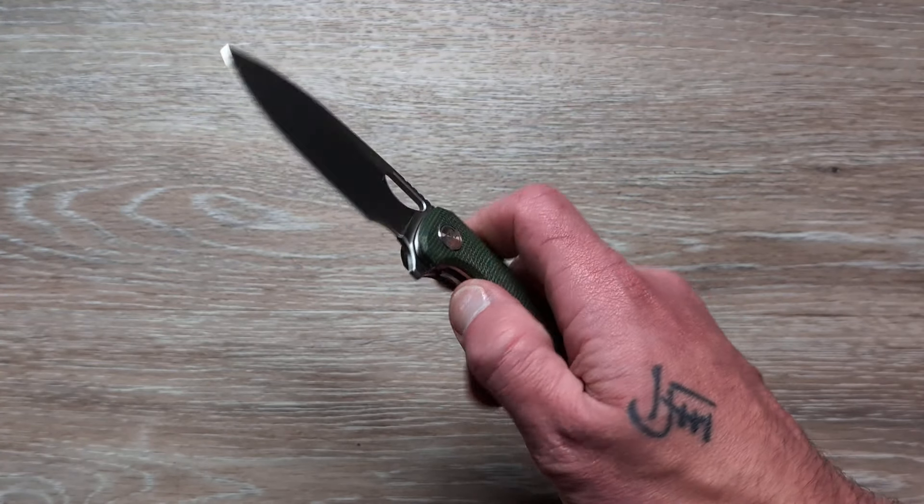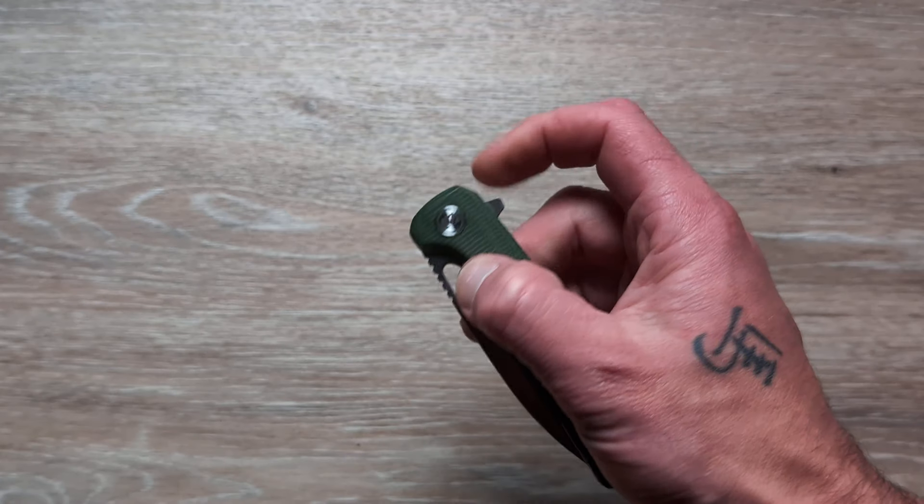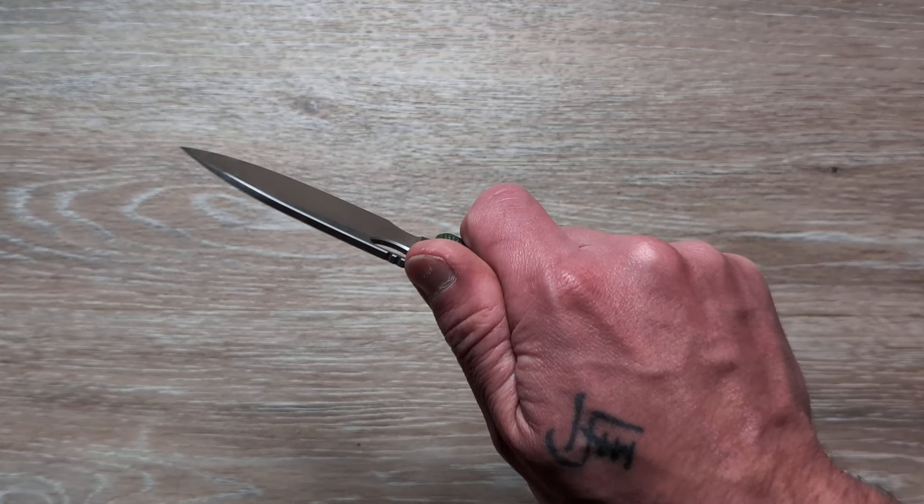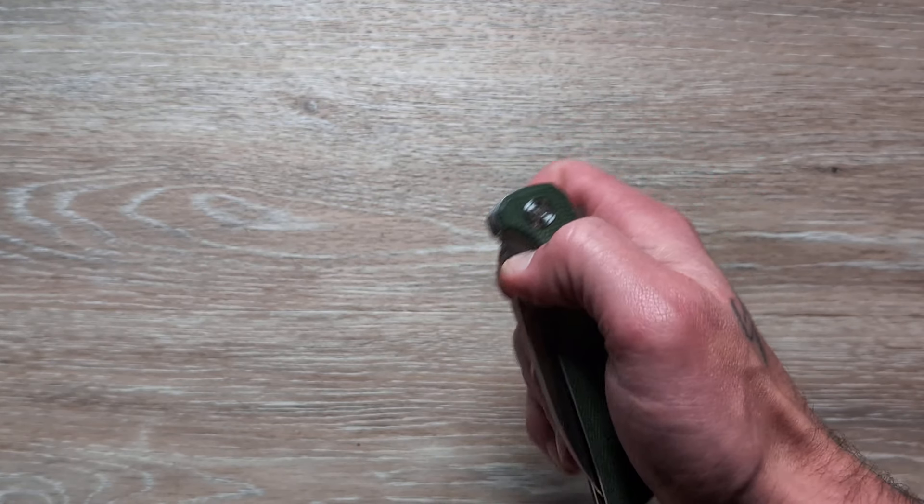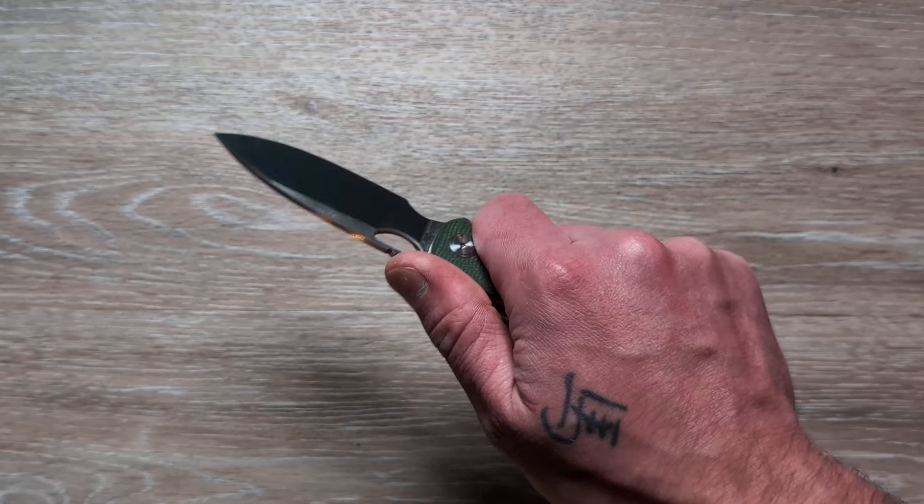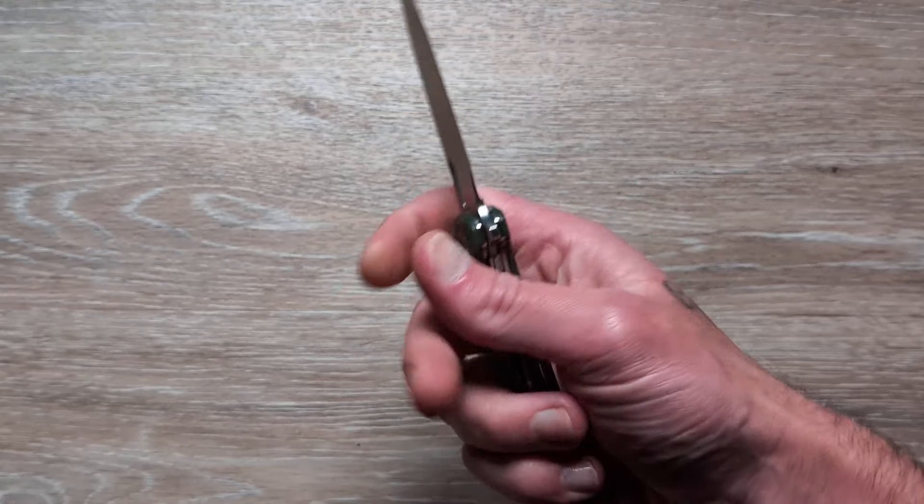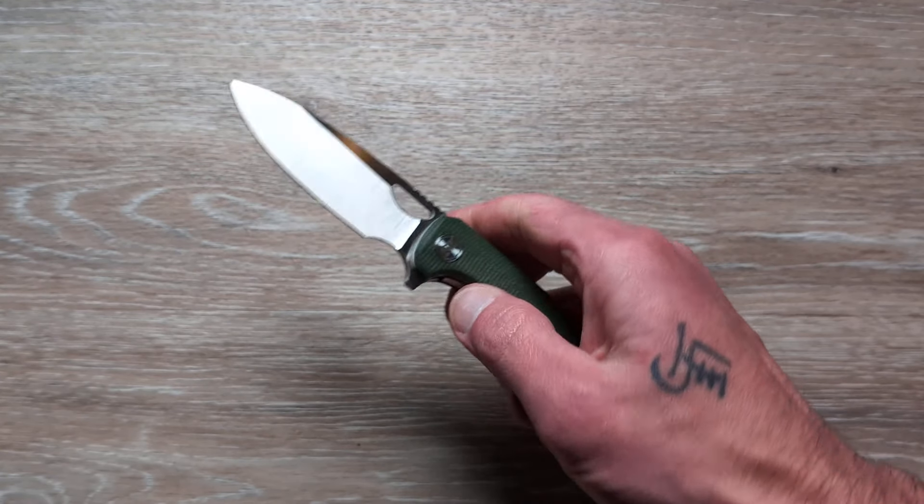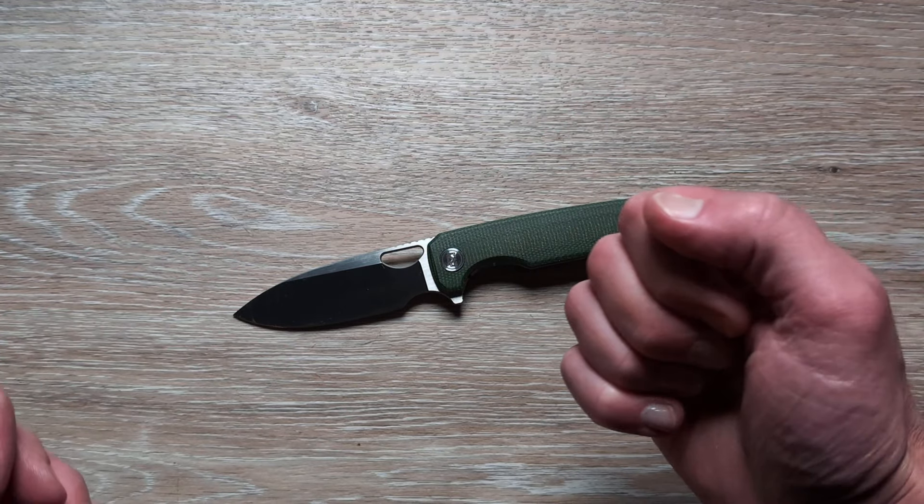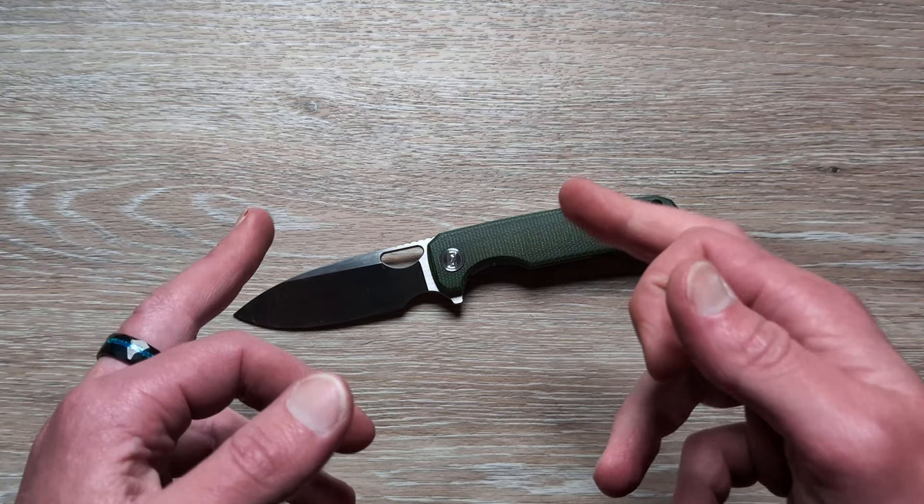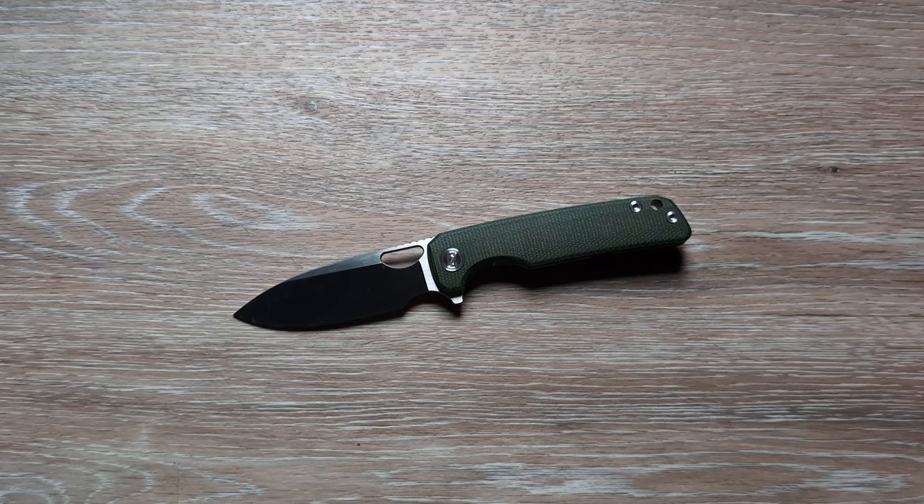And these are coming in at like $50. $50 for a solid, well-made, fun, fidgety EDC knife with a milled tie clip and some beautiful micarta. $50, absolutely insane. Miggeron continues to throw haymaker after haymaker, and they are landing them bad boys.